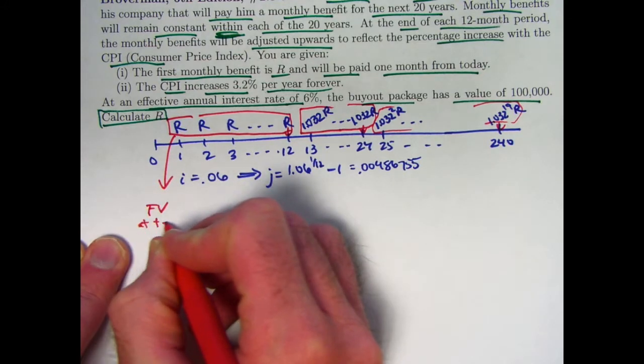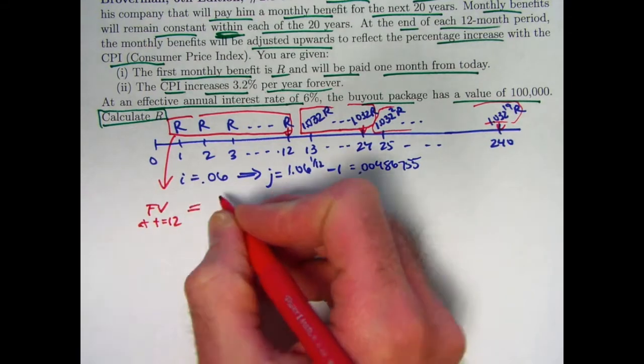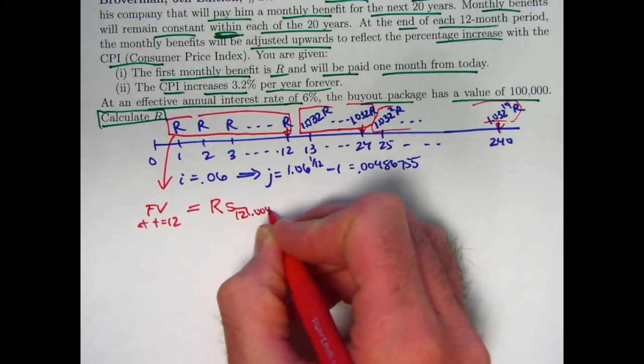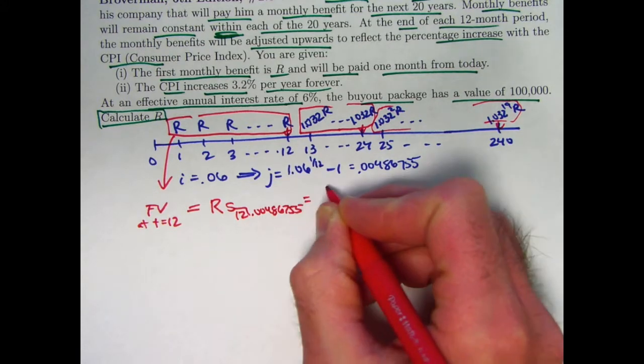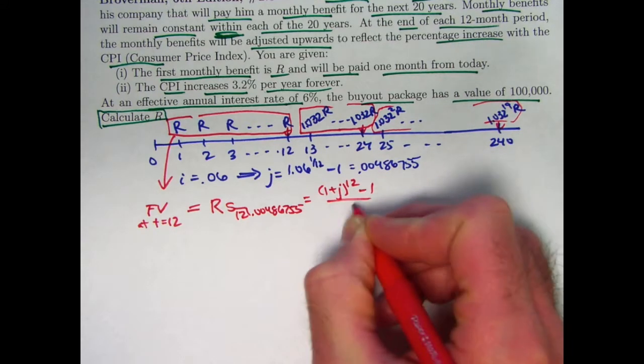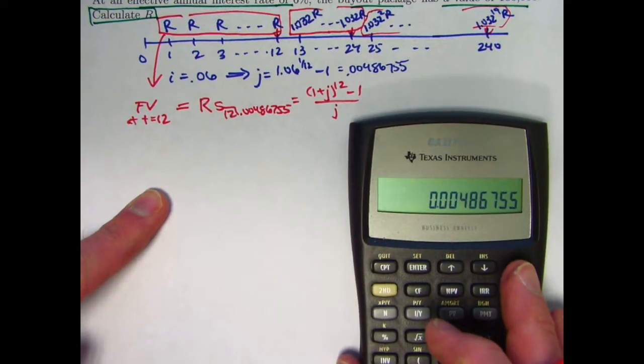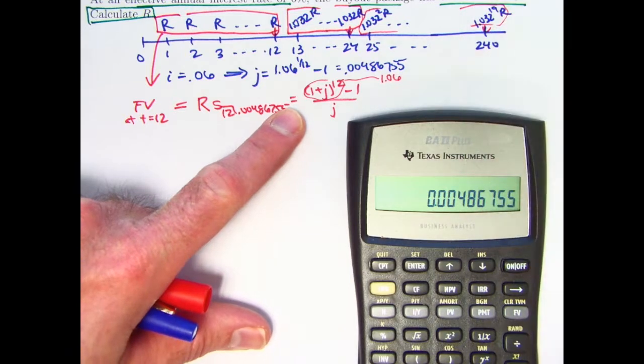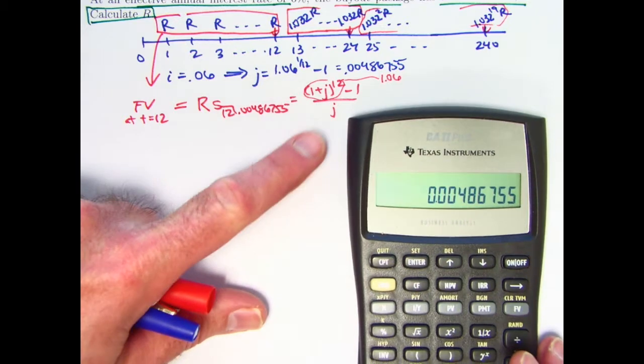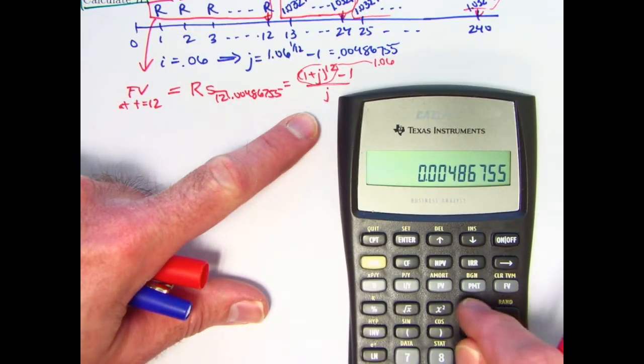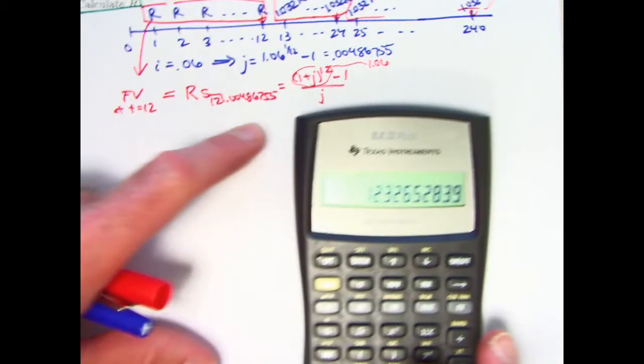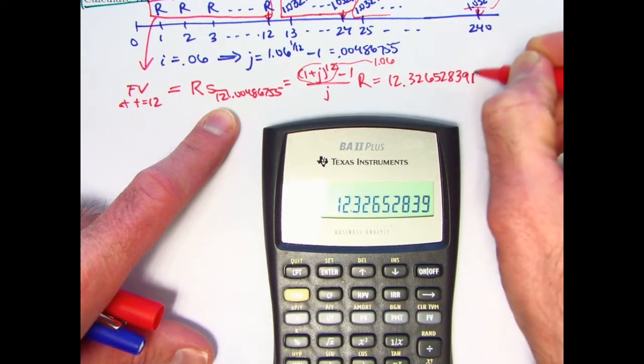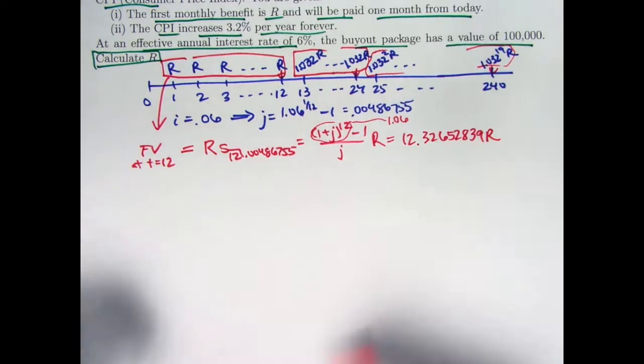The future value at T equals 12 for that first year's series of payments is going to be R times S angle 12 with this interest rate 0.00486755. The formula, that's 1 plus J to the 12th minus 1 over J. 1 plus J to the 12th is the same as 1 plus I. This is going to be 1.06 for this problem. So minus 1 is going to be 0.06. So I want to take 0.06 divided by J. This is J on my calculator here right now. So I'll just do the reciprocal of J times 0.06. And this is multiplied by R. So I get 12.32652839 times R. In terms of R, that's the future value of the first year's payments evaluated at time 12.